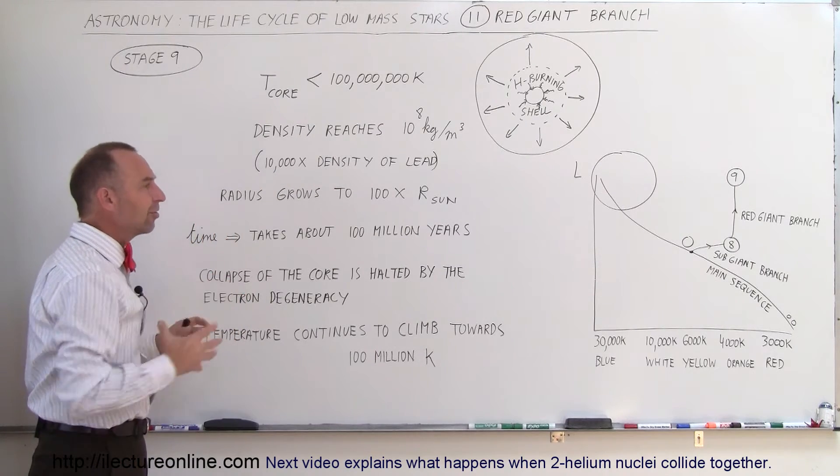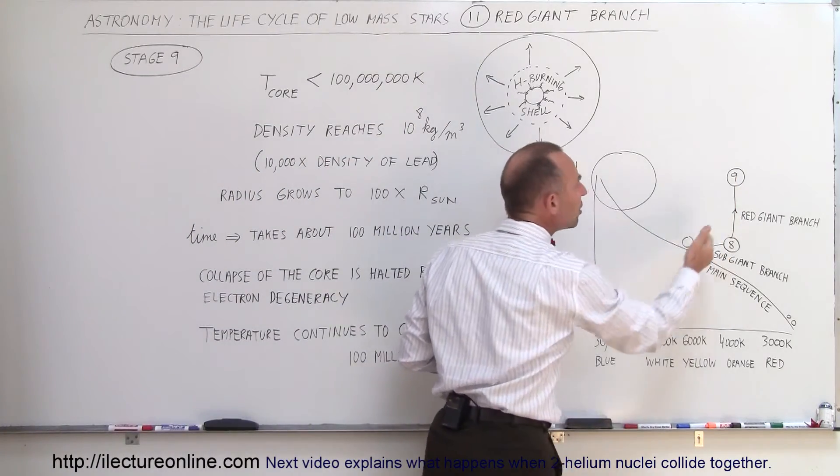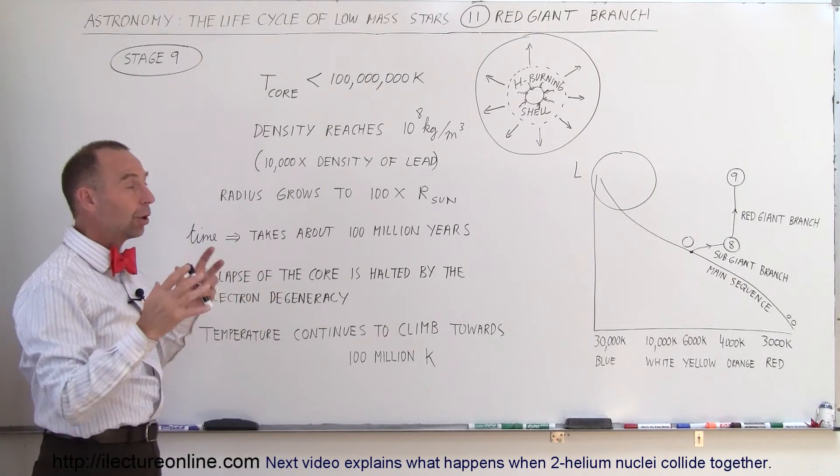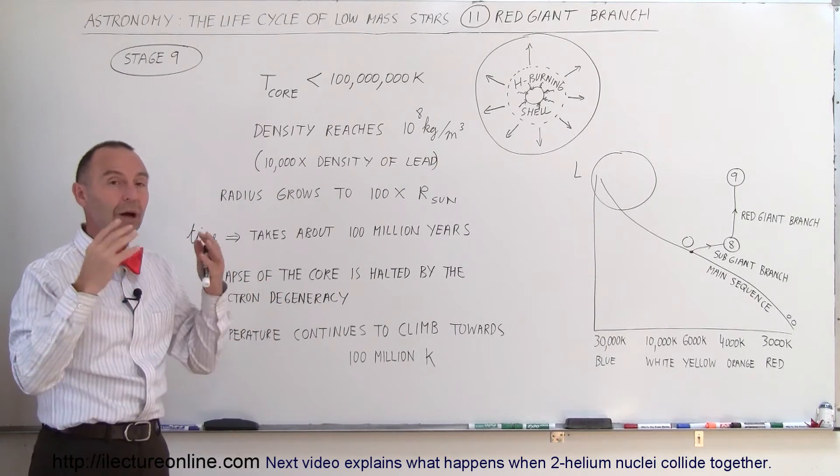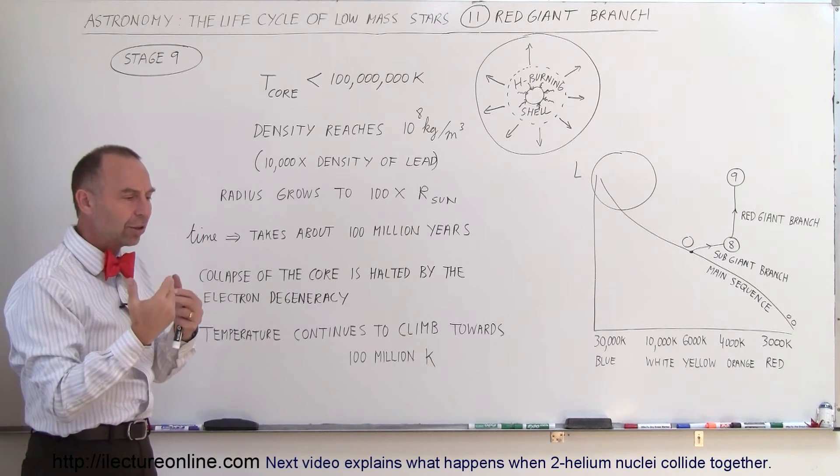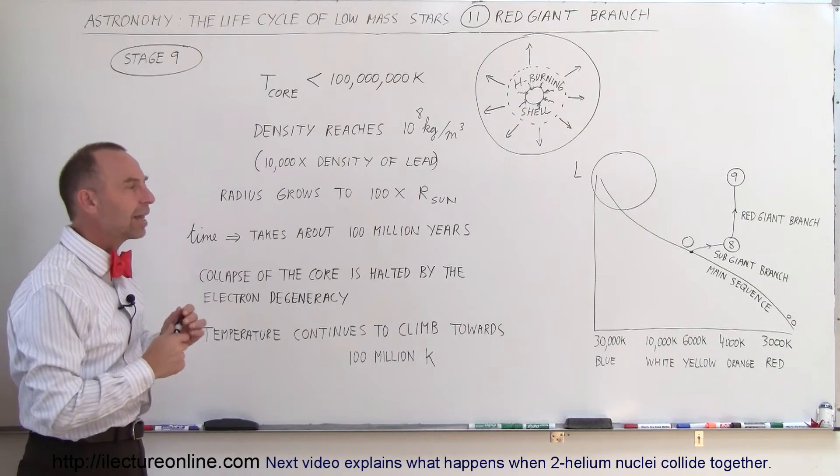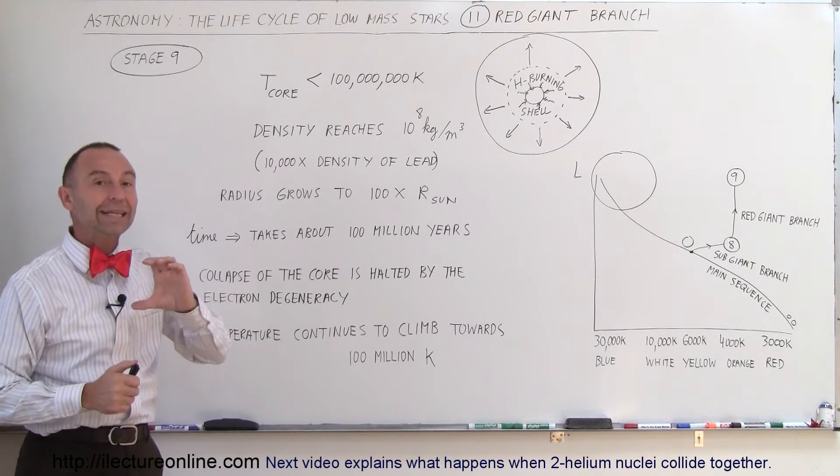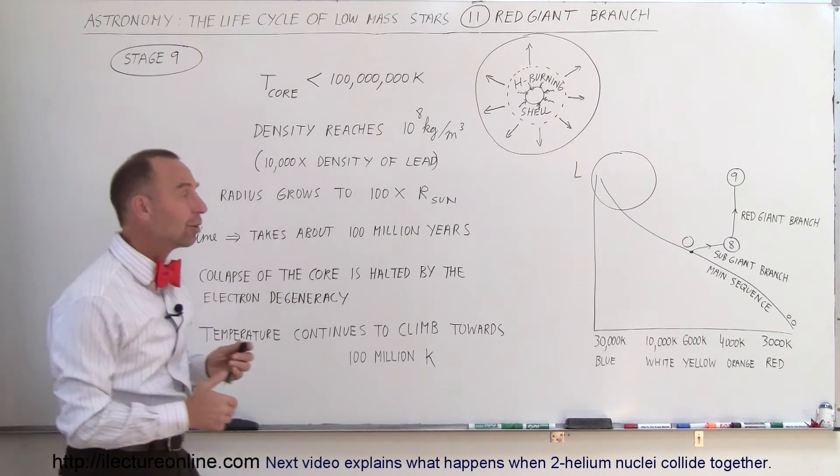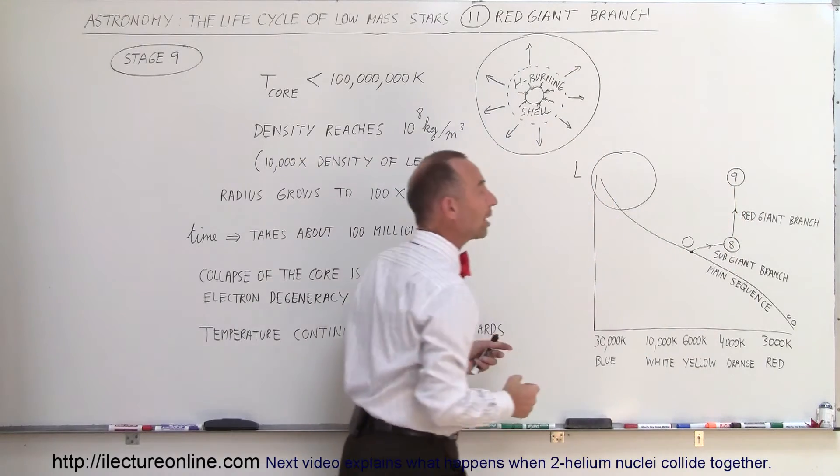Now, how long does that process take? It's estimated that process takes about 100 million years. We can come up with that estimate based upon looking at these stars as we draw them on the HR diagram from these big clusters. The big clusters gives us a really good sense of how long these various processes take by the number of stars that you can find in each stage from a cluster.